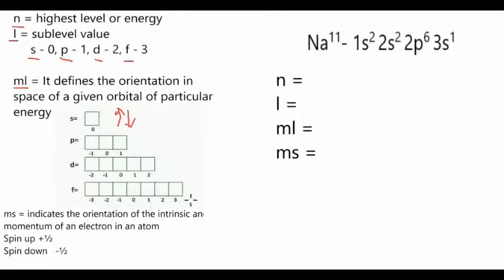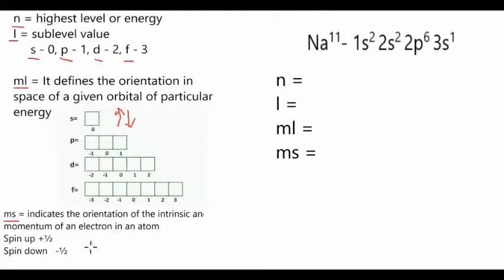The fourth quantum number is ms, or the spin quantum number. It indicates the orientation of the intrinsic angular momentum of an electron in an atom. If the electron ends up with an arrow up or spin up, it has an ms value of positive one half. But if the electron is spin down or arrow down, it has a value of negative one half.